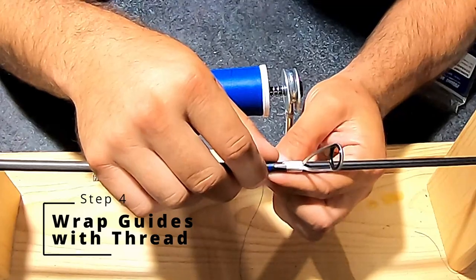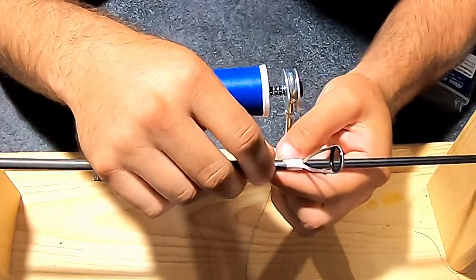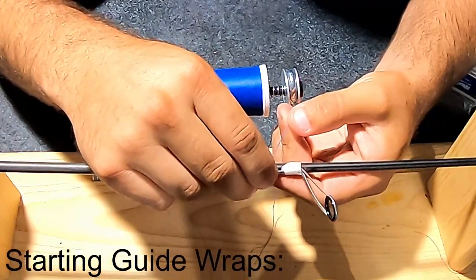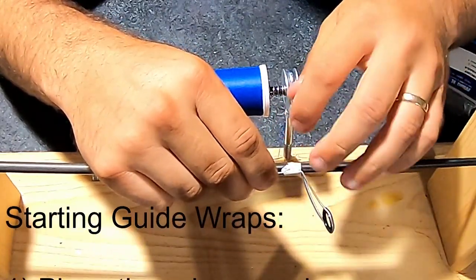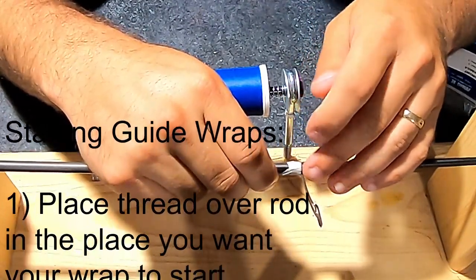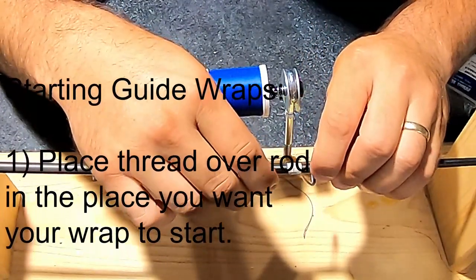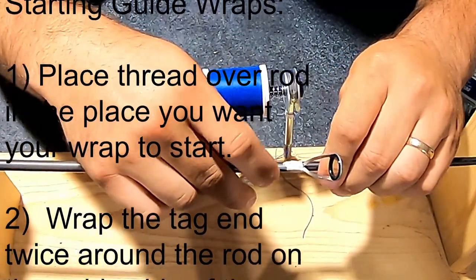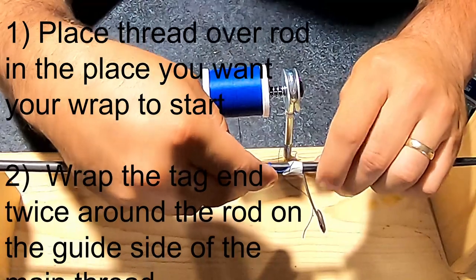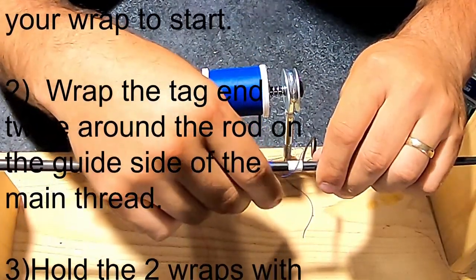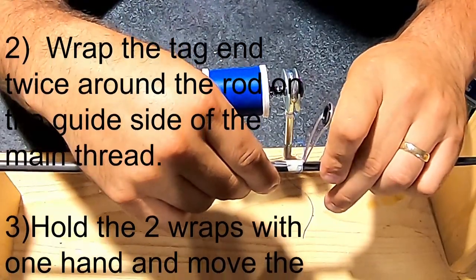Once you have your guides set in place and you have the layout that you want, it's time to wrap them on with some thread. To start a guide wrap, you're going to take your thread off of your wrapper and drape it over the rod. Essentially, you've got a main line from your spool to the rod, and then you've got that tag end that's on the other side of the rod.